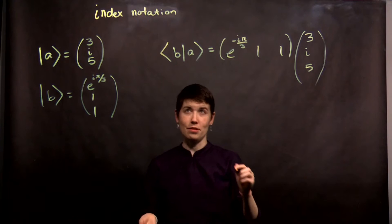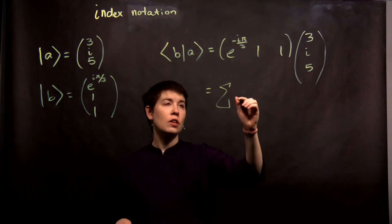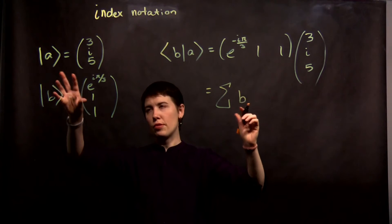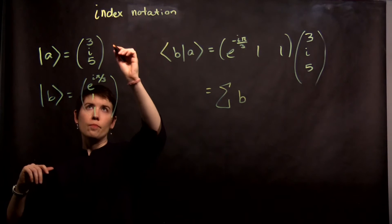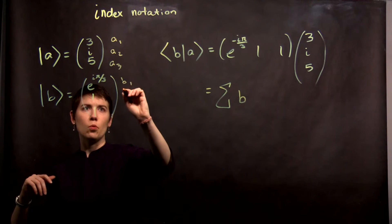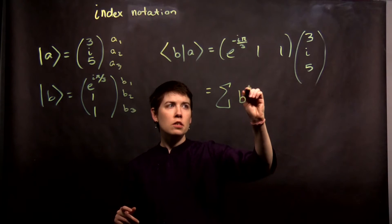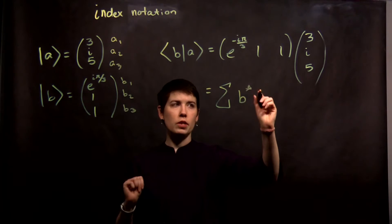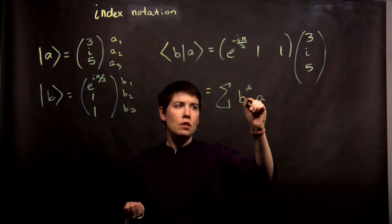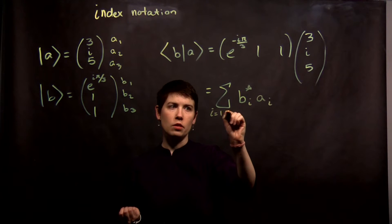Now another way to write this is going to be the sum of bi, and in this case we're thinking about this being a1, a2, a3, b1, b2, b3. So b star, because we had to complex conjugate it, a, but then we would say i, i, where i is going from 1 to 3.